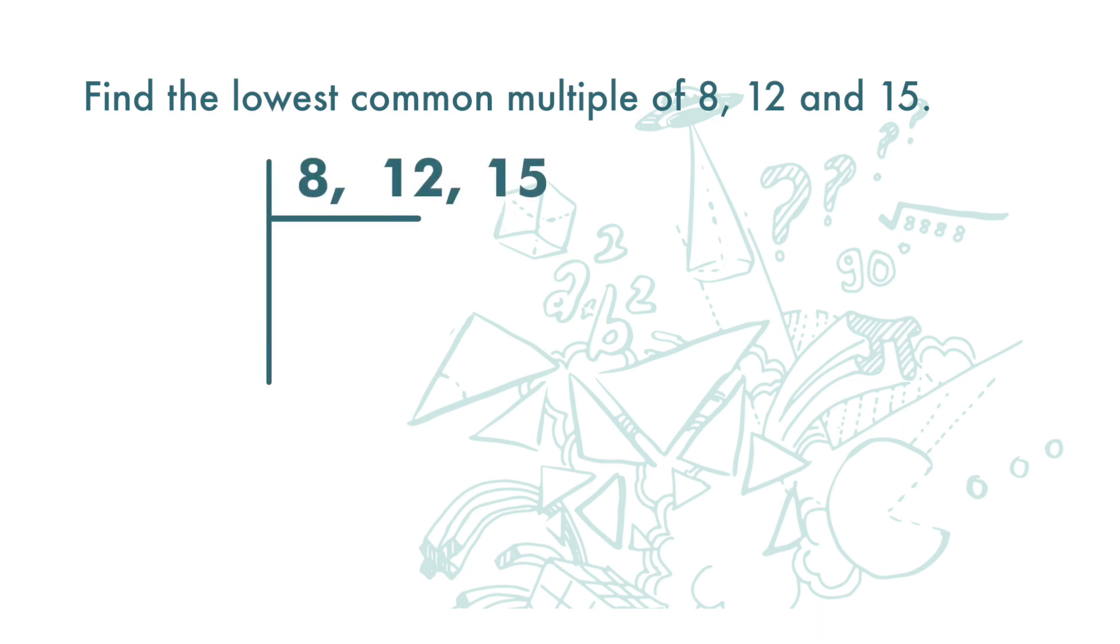There is actually no number where 8, 12, and 15 can all be divided by without remainder. But when we want to find the lowest common multiple, as long as two of the numbers can be divided by a number, we will proceed.